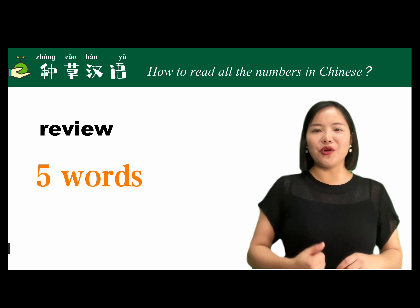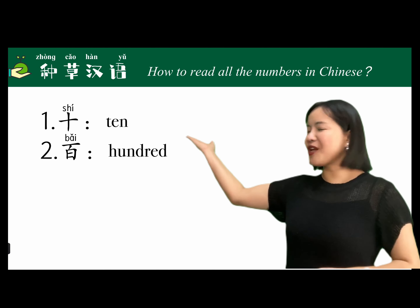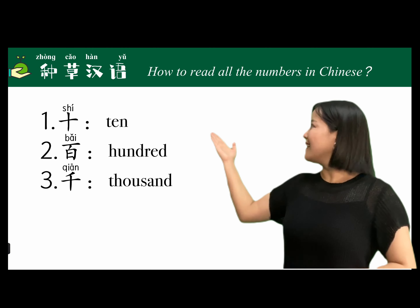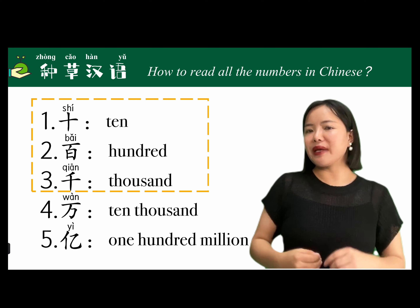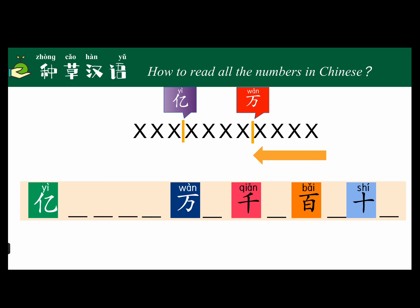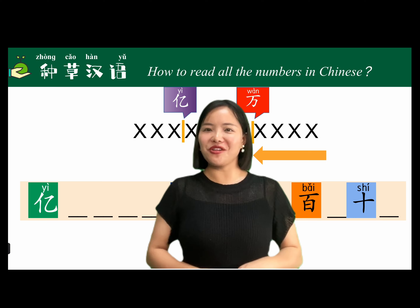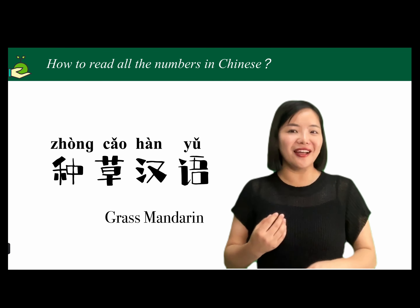At last, let's review those five words and one pattern together. The five words are 十 (shí), 百 (bǎi), 千 (qiān), 万 (wàn), and 亿 (yì). The pattern for reading numbers in Chinese is counting from back to front, four numbers forming a unit. The first unit covers up to 10,000 (万), and the second unit covers up to 100 million (亿). These words can cover all common numbers in daily life. If you found this video useful, please feel free to forward and comment, subscribe, and we will post more useful videos in the future. Goodbye!